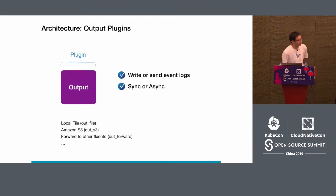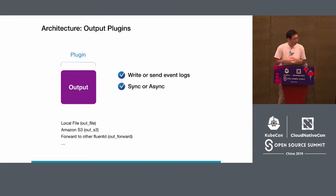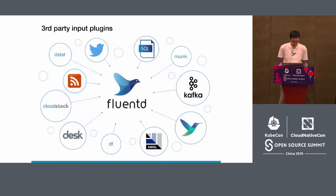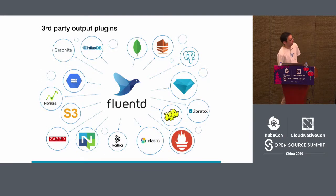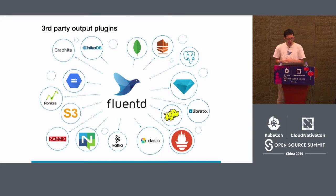The output plugin is simple because the buffer plugin manages the data stream and chunks. The output plugin just writes data to the destination — MongoDB, Hadoop, or other cloud services. For input plugins, you can receive data from Kafka or collect from an HTTP endpoint. The community provides many output plugins for various destinations: MongoDB, Prometheus, Elasticsearch, Kafka, and more.